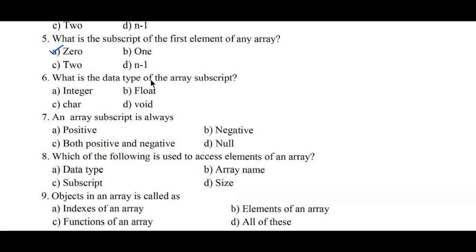Question number six: what is the data type of the array subscript? Options: a) integer, b) float, c) char, d) wide. The array subscript begins from zero to n minus one, which represents integer numbers, so option a, integer, is the right answer. Question number seven: an array subscript is always — a) positive, b) negative, c) both positive and negative, d) null. Array subscript is always positive, hence option a is the right answer.